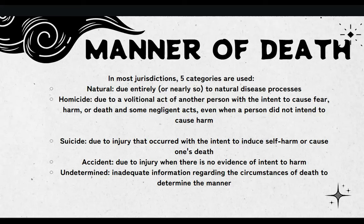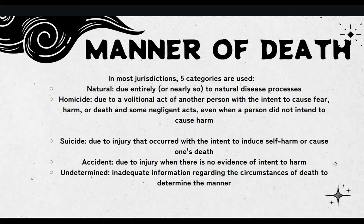Homicidal manner does not indicate a criminal homicide, which is determined by the legal process and not by the certifier of death. Next is suicide — due to injury that occurred with the intent to induce self-harm or cause one's own death. Accidental or accident is due to injury when there is no evidence of intent to harm. And lastly, undetermined means there is inadequate information regarding the circumstances of death to determine manner. An example is when an individual is found unconscious with a large subdural hemorrhage and, in the absence of information on the events leading up to death, it may not be possible to determine if the hemorrhage is due to an accidental fall, homicidal violence, or other causes.